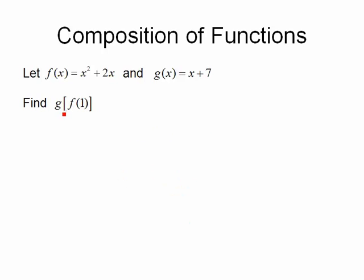If I say G of F of 1, now we have to put the 1 into F first, figure out what the output is, and then put that into the G function. F of 1 is 1 squared plus 2 times 1, or 3. Now let's put 3 into G. I'm going to put in place of F of 1 the number 3, and G of 3 is simply 3 plus 7, or 10.